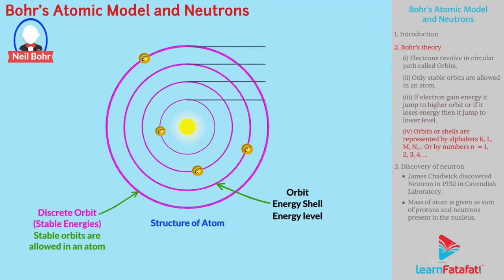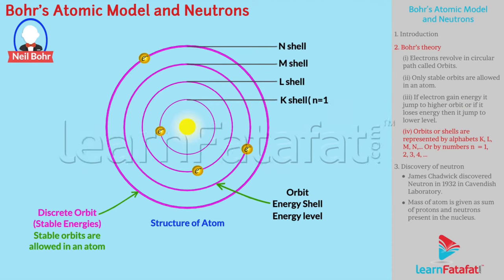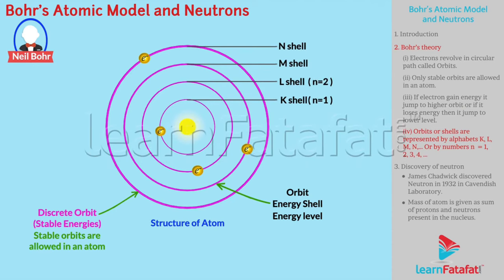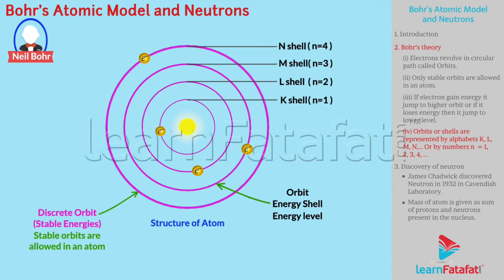Orbits or shells are represented by alphabets K, L, M, N, or also by numbers n = 1, 2, 3, 4.